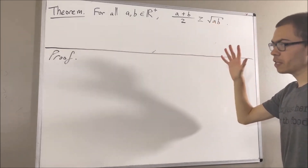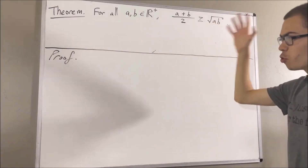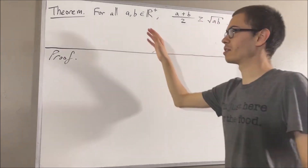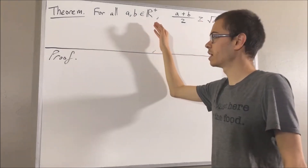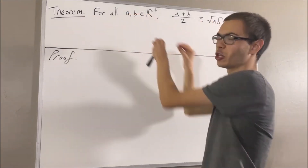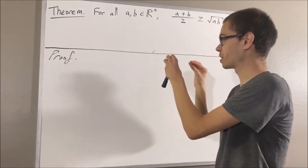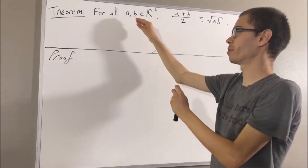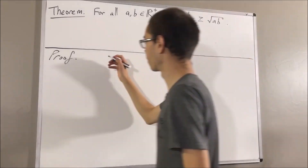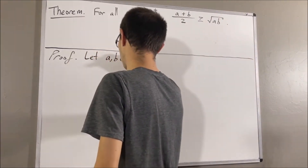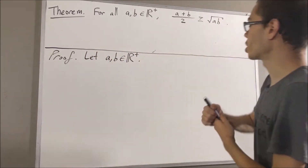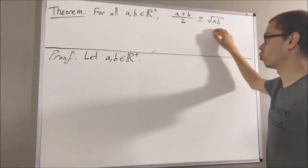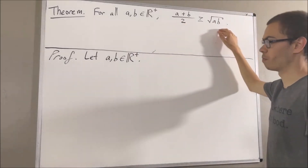Now, to start out the proof, since we're trying to prove a statement about every two positive real numbers, give me any two positive real numbers — I'll call them a and b. And from here, we want to show that this inequality is true.